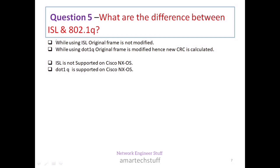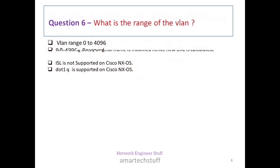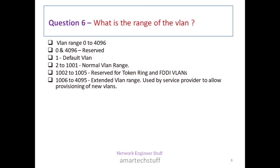To summarize: in ISL the original frame is not modified, whereas in dot1q a new CRC is calculated. One more important difference: ISL is not supported on Cisco NX-OS, whereas dot1q is supported on Cisco NX-OS, which runs on Cisco Nexus switches used in data centers. Mentioning this point can make a good impression in data center interviews.